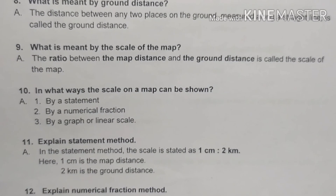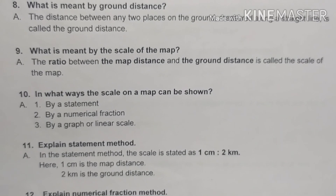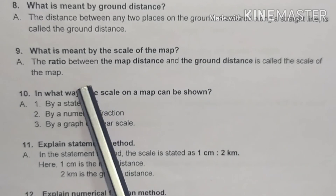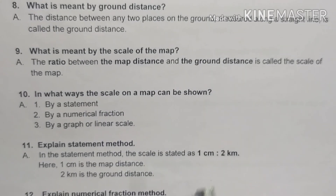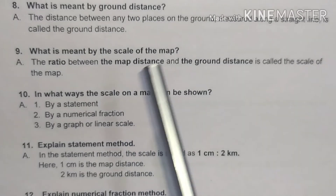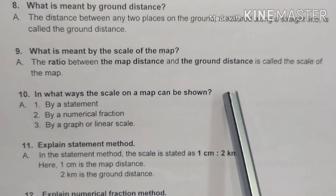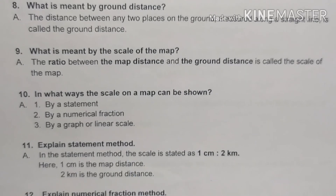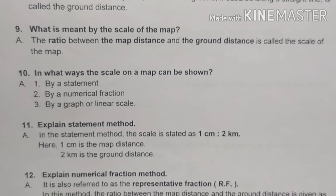What is meant by the scale of a map? The ratio between the map distance and the ground distance is called the scale of the map. We have already learned about map distance and ground distance — the ratio between them is the scale of the map.